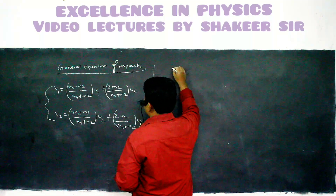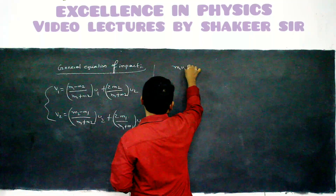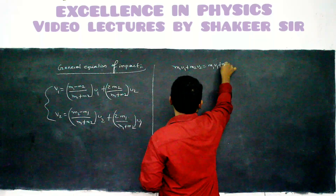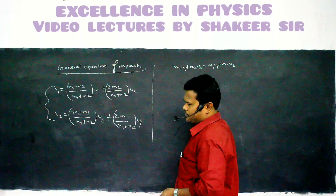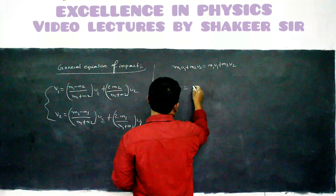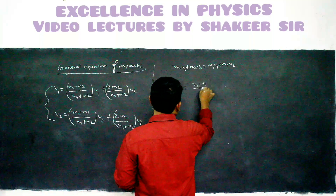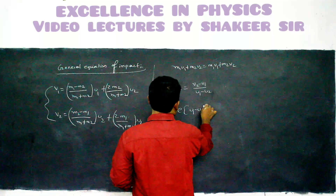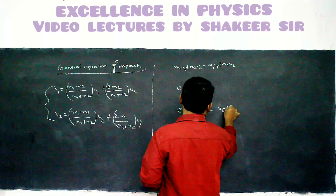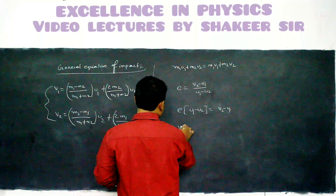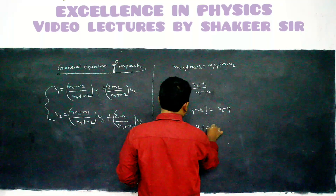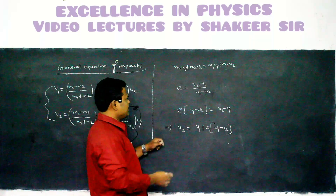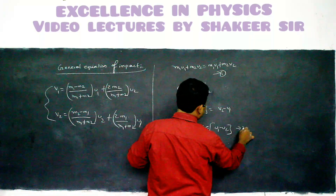In any condition, momentum is always conserved: M1U1 plus M2U2 equals M1V1 plus M2V2. This condition is always satisfied. Next, coefficient of restitution is V2 minus V1 by U1 minus U2. Therefore E into (U1 minus U2) equals V2 minus V1. From this, V2 equals V1 plus E(U1 minus U2) — equation 2. Also, V1 equals V2 minus E(U1 minus U2) — equation 3.